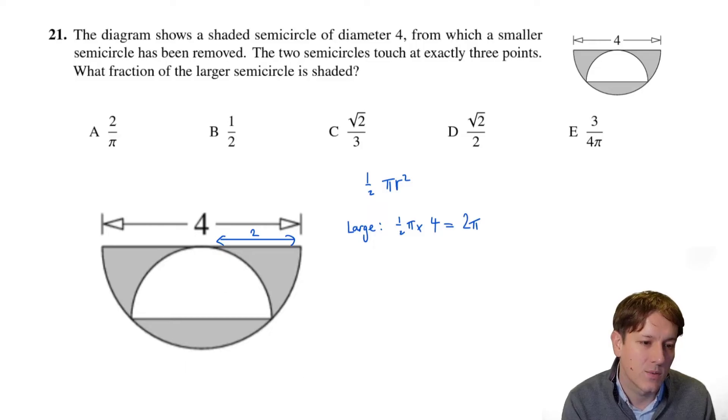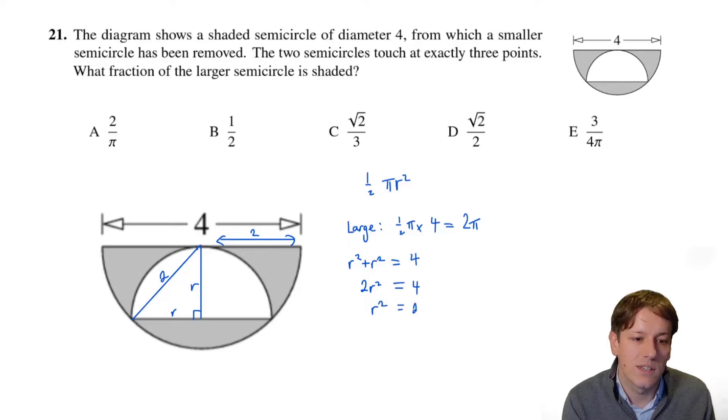So the tricky bit here is working out the area of the white semicircle here, and to do that we're going to add in this triangle and we'll apply Pythagoras theorem to it. And this is a very important triangle here because we know the radius of the large semicircle is 2, and this is also a radius of the large semicircle, so that length is 2, and that's really our link between the large semicircle and the small semicircle. So if I take this to be r, the radius of the smaller semicircle, then we've got r squared plus r squared is equal to 2 squared, or 4 by Pythagoras theorem, so I've got 2r squared equals 4, and so r squared equals 2.